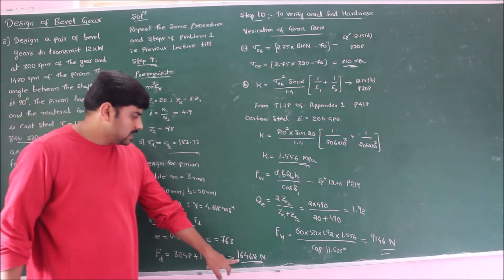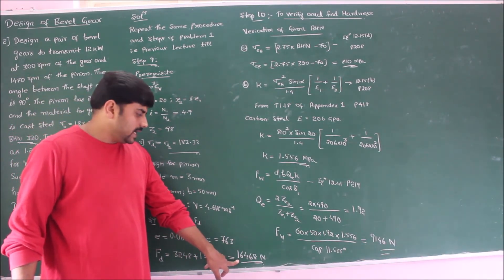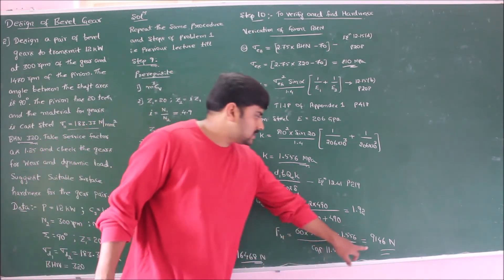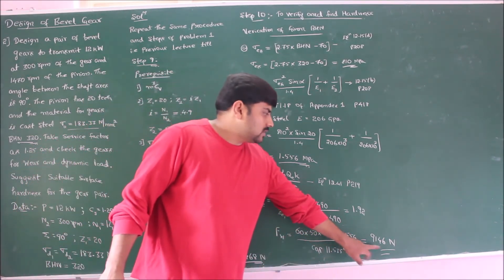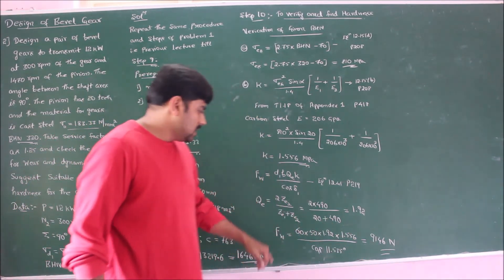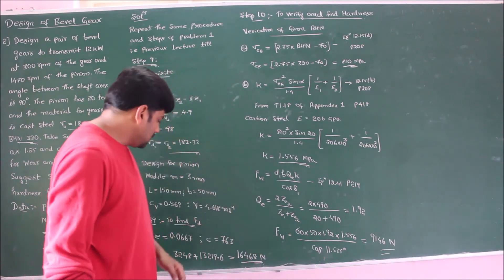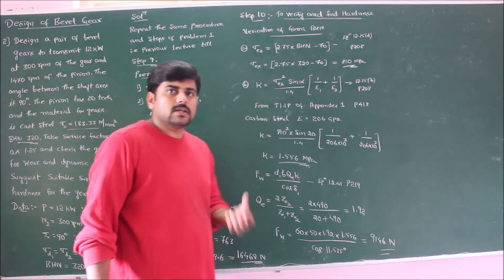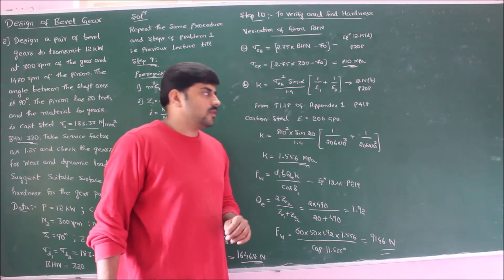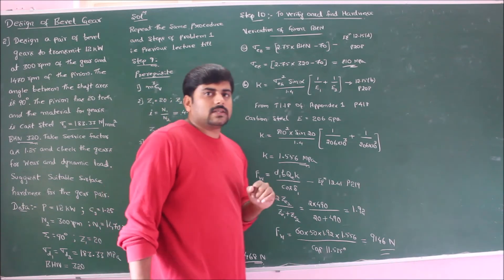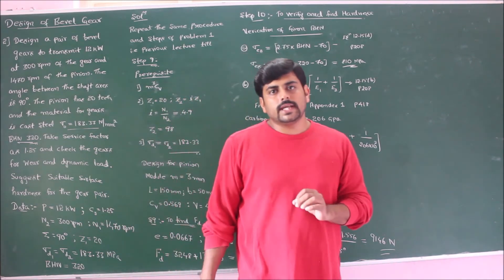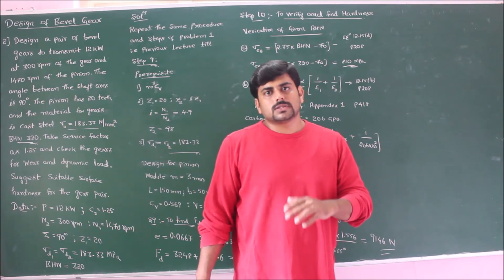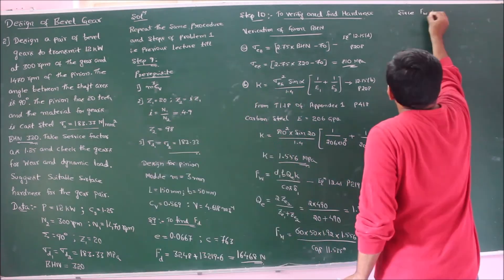Comparing the results: the dynamic load F_D = 16,468 N, while the wear load F_W = 9,146 N. Since F_W < F_D, the design fails from a wear strength point of view. Therefore, the given BHN of 320 is not suitable for this problem and we must recommend a new BHN.